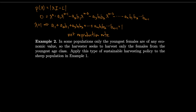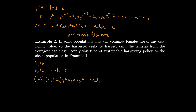With that in mind, we set h1 equal to h, but this time we are only harvesting the youngest age class, so all other values h2, h3, through h_n are set equal to 0. Then we have (1 minus h) times the net reproduction rate — that is, a1 plus a2·b1 plus a3·b1·b2 through a_n·b1·b2···b_{n-1} — equal to 1.